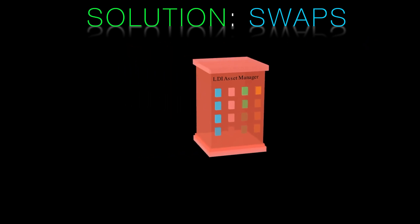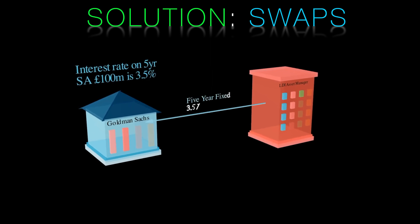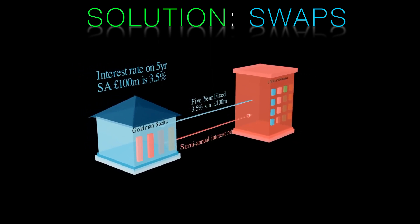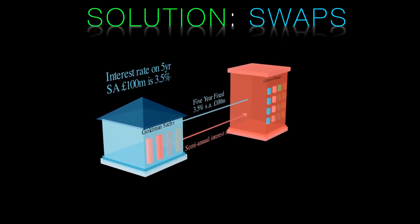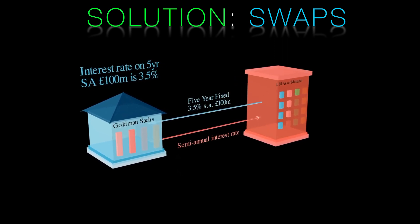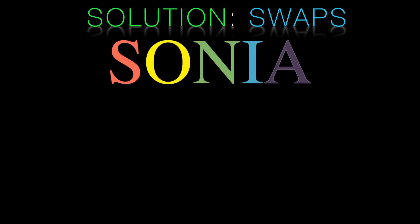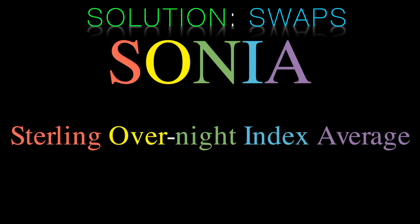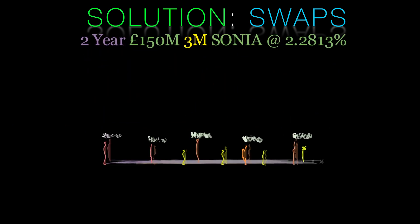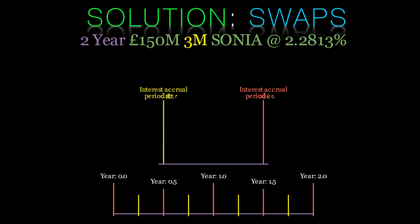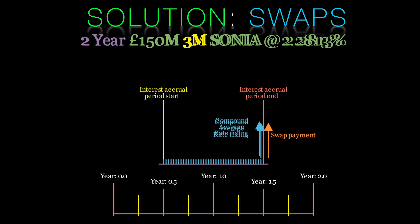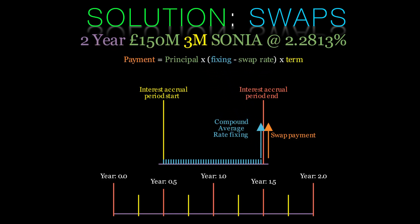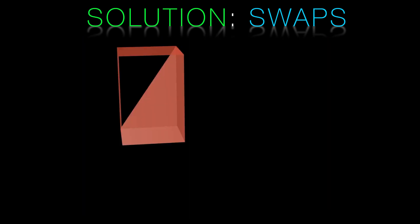An interest rate swap is a financial derivative contract in which two parties agree to exchange a stream of future interest payments for another based on a specified principal amount. Typically, one party pays a fixed interest rate and receives a variable rate tied to an index such as SONIA in the UK. SONIA, or Sterling Overnight Index Average, is the rate most commonly used for sterling swaps. Conversely, the other party pays the variable rate and receives the fixed rate. These swaps are used by businesses and financial institutions to manage exposure to fluctuations in interest rates, allowing them to stabilise the costs or revenues associated with their debt or investments. The actual principal amount is not exchanged — only the interest payment cash flows are swapped, making it a very cost-effective tool for interest rate risk management.